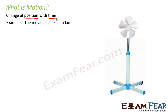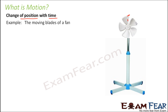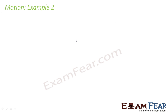Let's take the example of a fan. When you switch on the fan, it makes you feel cool because the blades are continuously moving. Looking at this picture, let's number the blades: blade one, two, three, four, and five. When the fan is at rest, blade one is at a certain position. As soon as it starts moving, blade one is changing its position with time. So we say the blades of the fan are in motion.